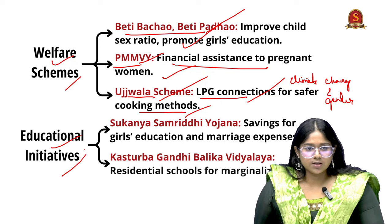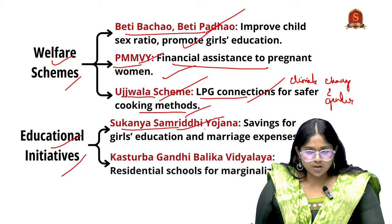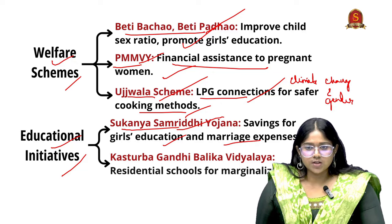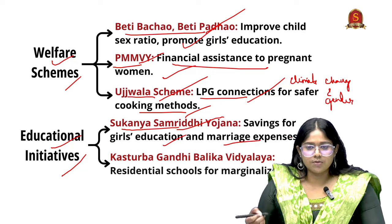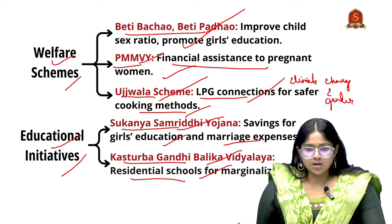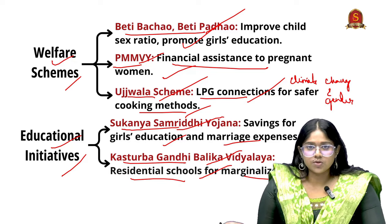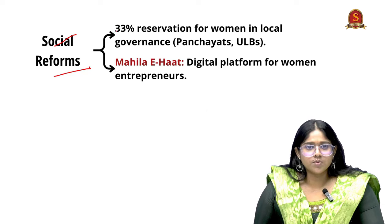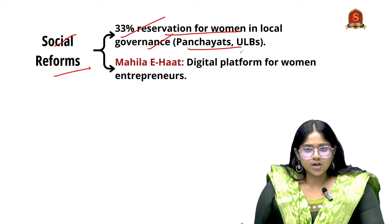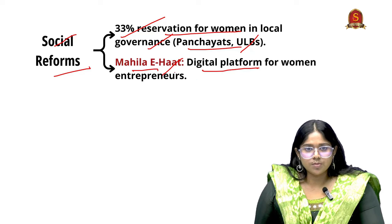Next is educational incentives — Sukanya Samriddhi Yojana focuses on saving for girls' education and marriage expenses, reducing dependency on the family. Next is Kasturba Gandhi Balika Vidyalaya, which focuses on residential schools for marginalized girls so that parents are more aware of enrolling them in schools. Looking at social reforms — 33% reservation for women in local governance has been allocated, including panchayats and urban local bodies. Next is Mahila Haat, a digital platform for women entrepreneurs to promote their products.